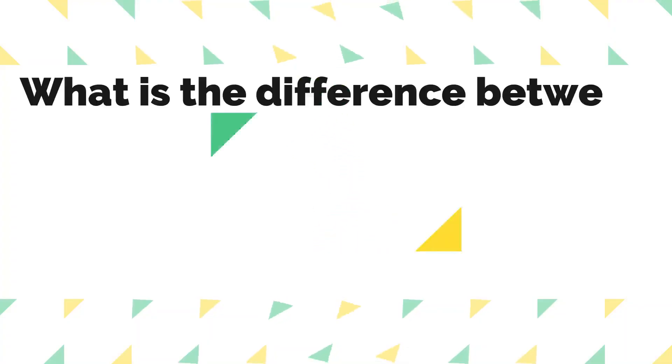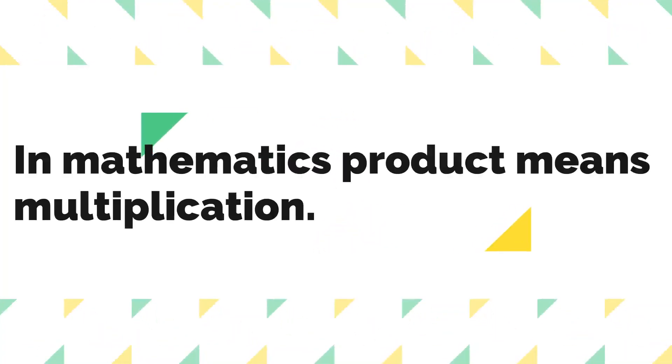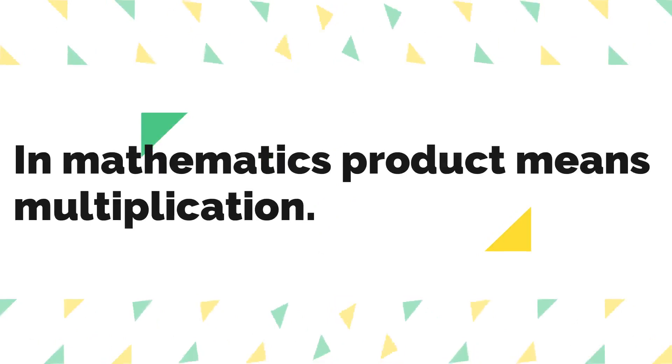When you are asked what's the difference between ten and seven, it is ten minus seven and the answer is three. Easy! Now let's look at products in mathematics. When we talk about product, it simply means multiplication.